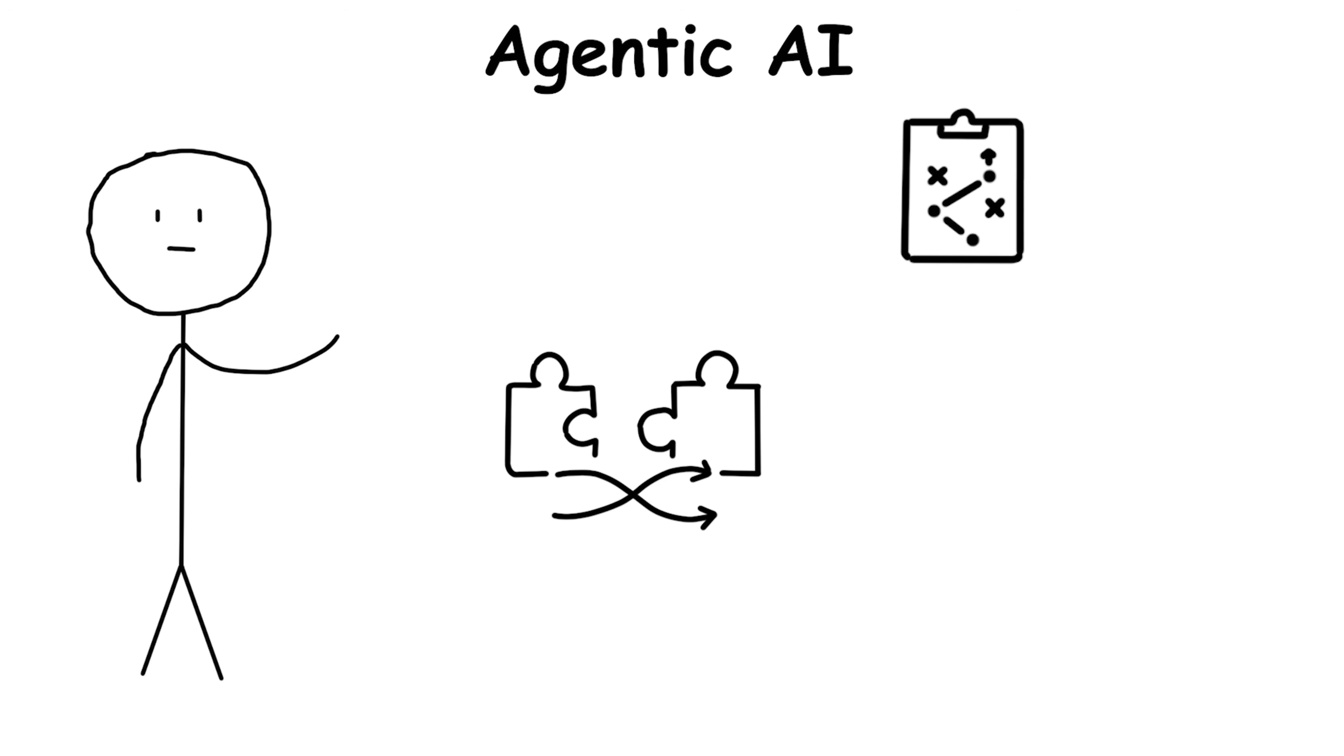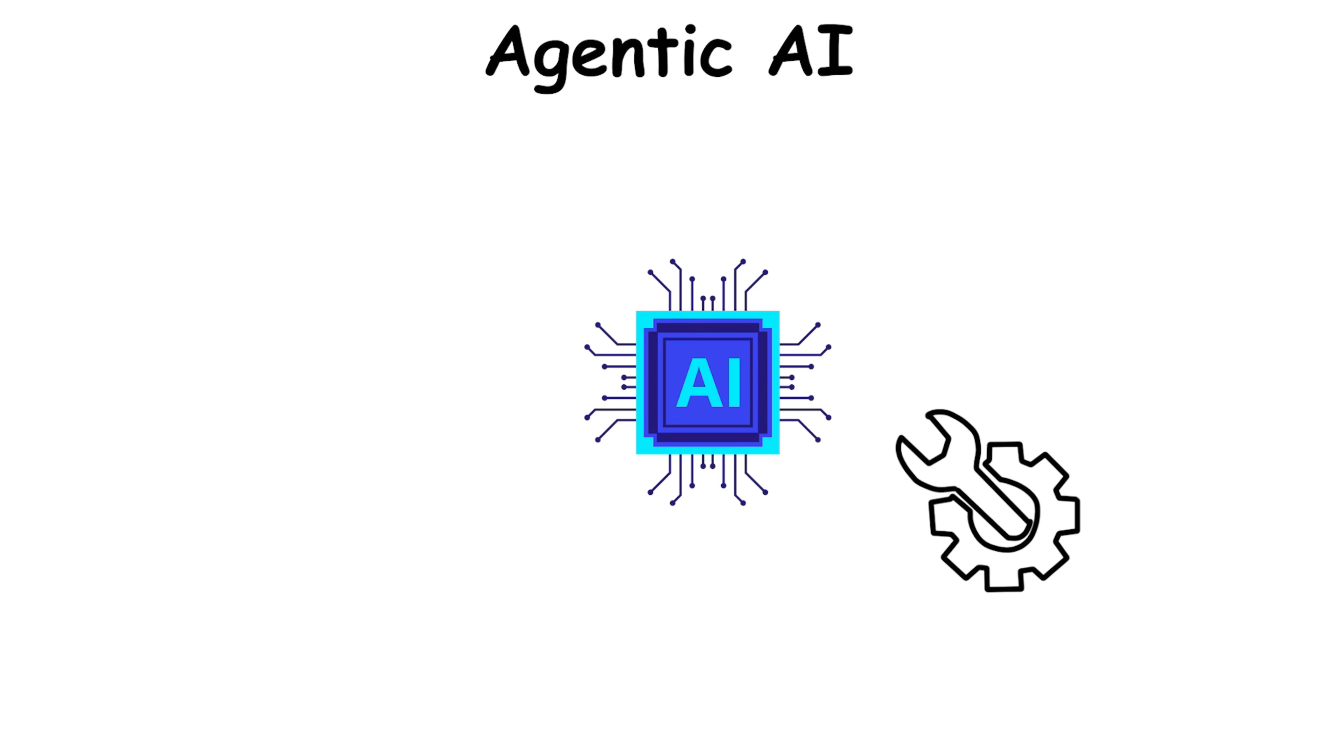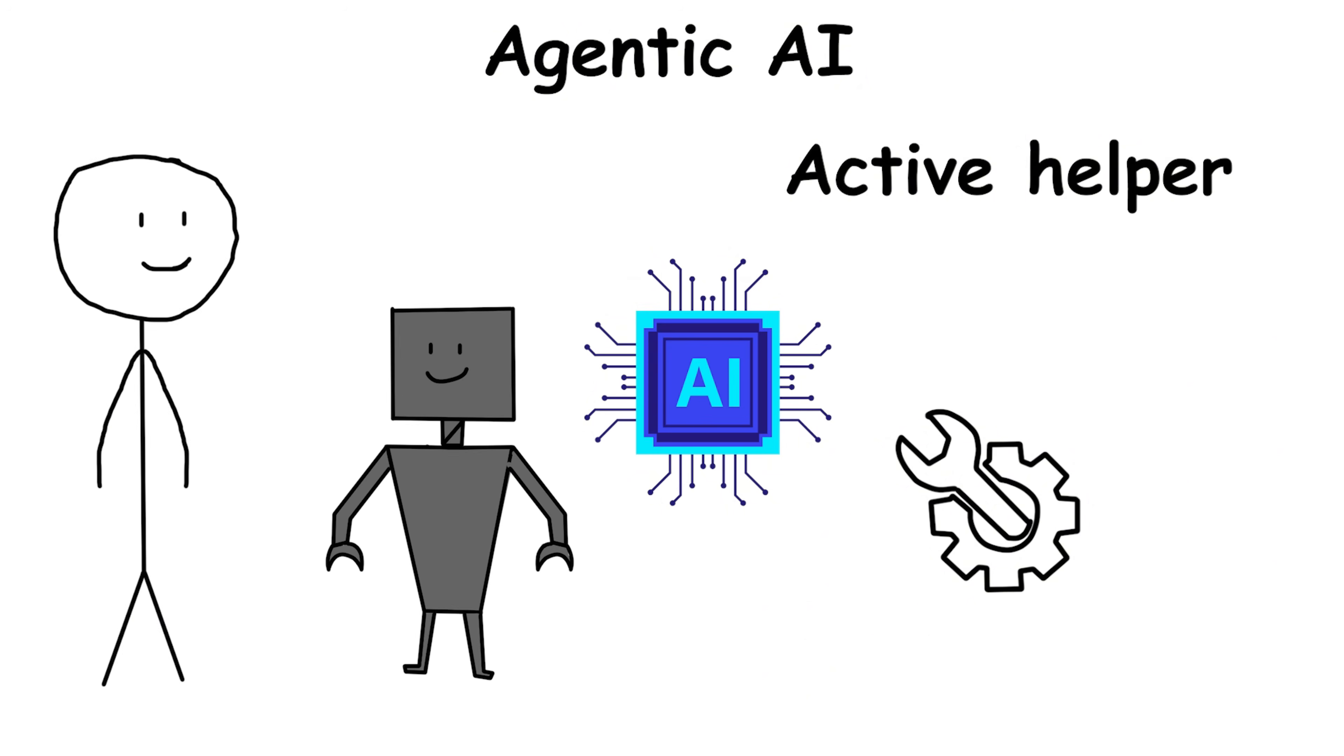Agentic AI combines planning, memory, and real-time decisions, turning AI from a passive tool into an active helper that can work alongside humans with minimal guidance.